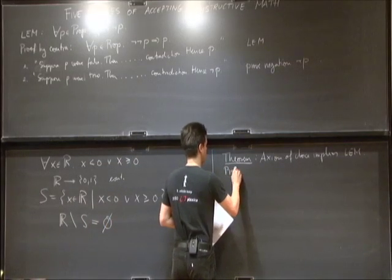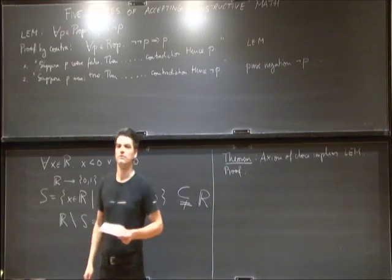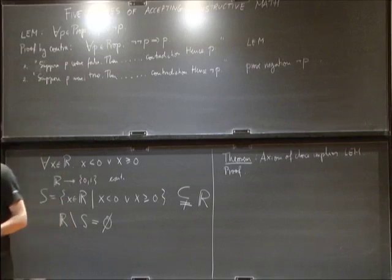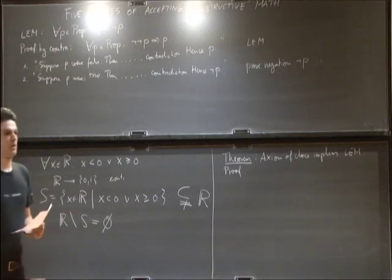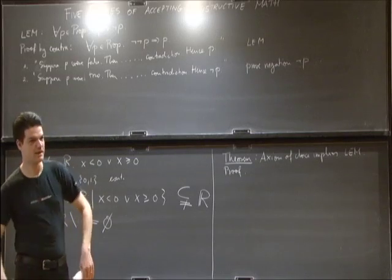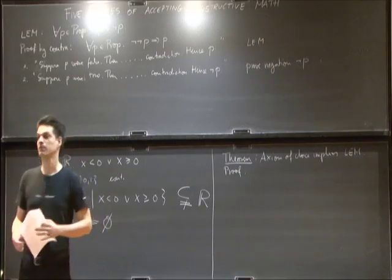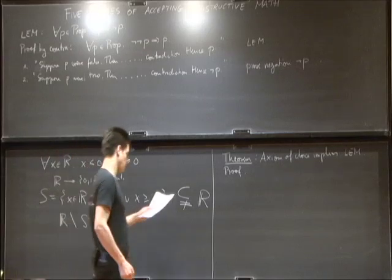How does the proof go? Whenever you hear axiom of choice, you think: large sets, large families of sets, large products, trouble. In constructive mathematics, the trouble is at your feet — with nice little finite sets. So I'm going to use a family that has just two sets in it. Define the set 2 = {x : x = 0 or x = 1}, then take any proposition P in Prop that we are supposed to decide.